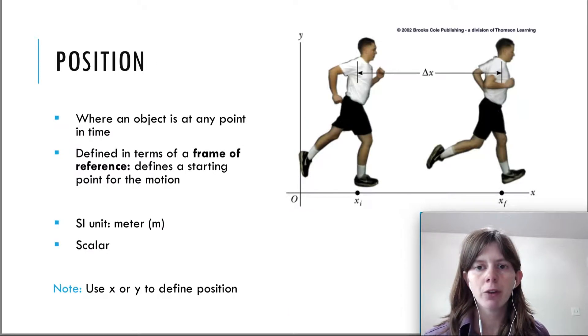So the first quantity is actually position, and I went over this in the moving man video. Position just tells you where you are, and so it's defined in terms of a frame of reference, which is the origin.